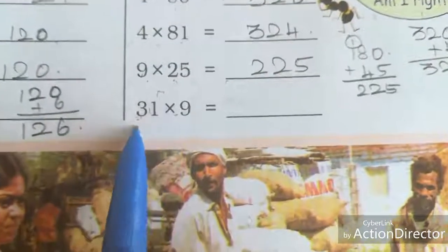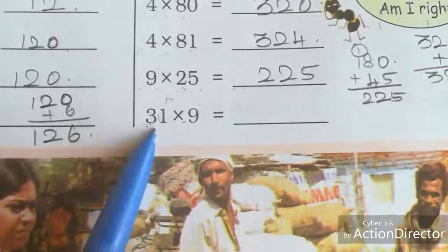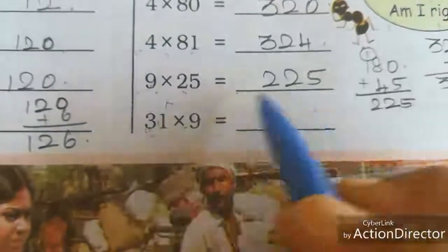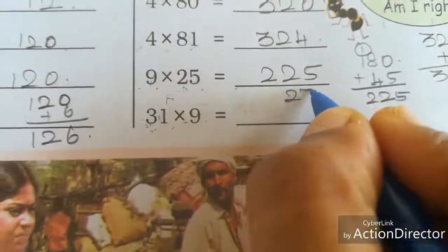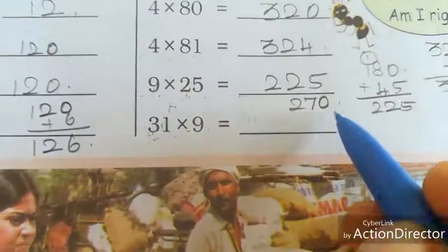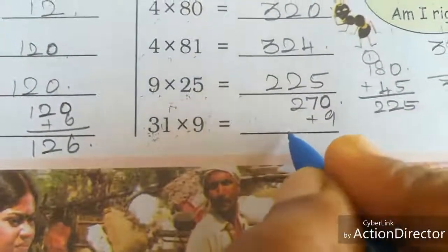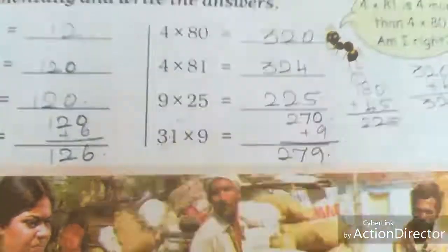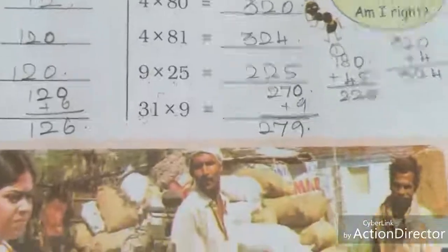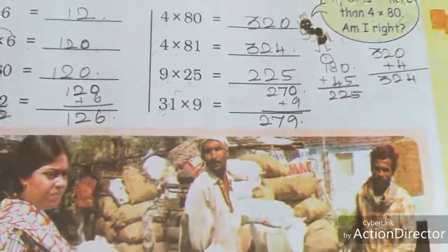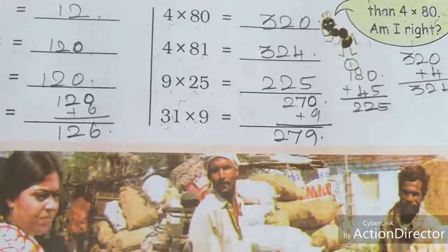Next, 9 into 31. We want to split the numbers into tens and ones: 30 plus 1. First, you have to multiply. 3 nines are 27, then add the 0, so 270. 9 ones are 9. So what is the answer? 279. It is easy to calculate mentally, but I have written it. You have to do it mentally.